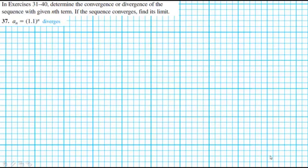Here's problem number 37 from section 8.1. We're asked about this sequence where a_n equals 1.1 to the nth power.